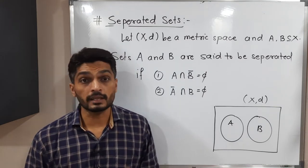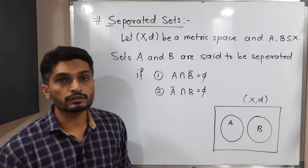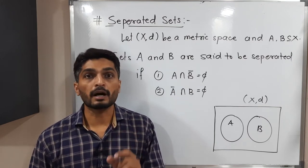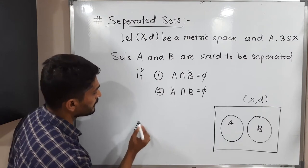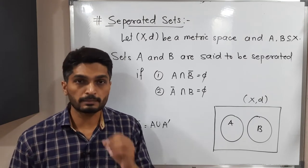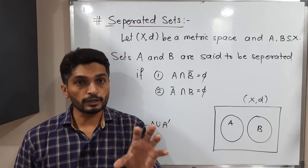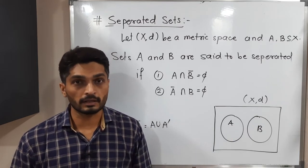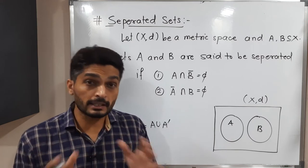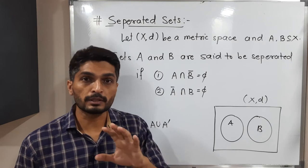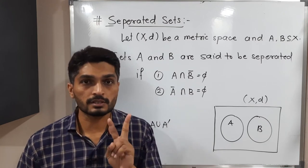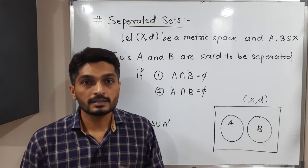In simple mathematical language, we say two sets A and B are separated if A intersection B-bar is equal to phi, and A-bar intersection B is equal to phi. A-bar means closure of set A, which is A union A-dash — that means the given set together with its set of limit points, i.e., the set and the points which are very close to it. Both conditions must be satisfied to declare A and B are separated sets.